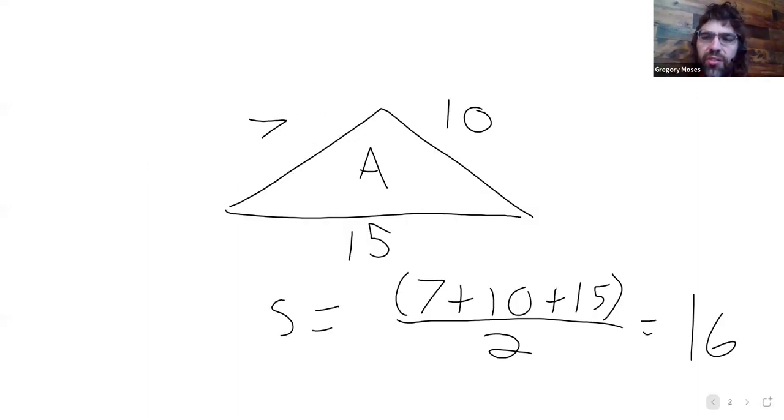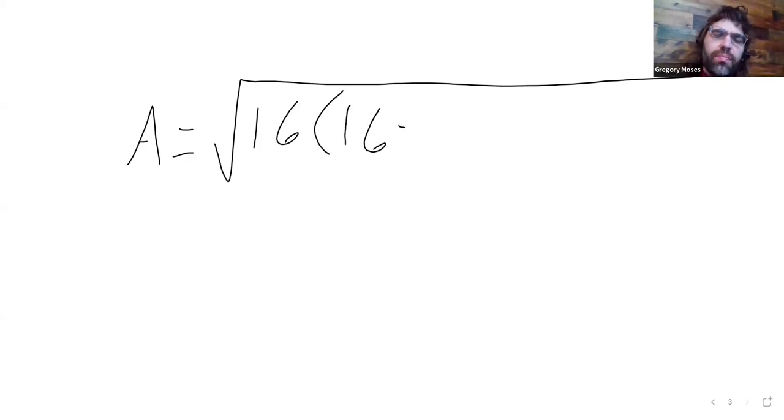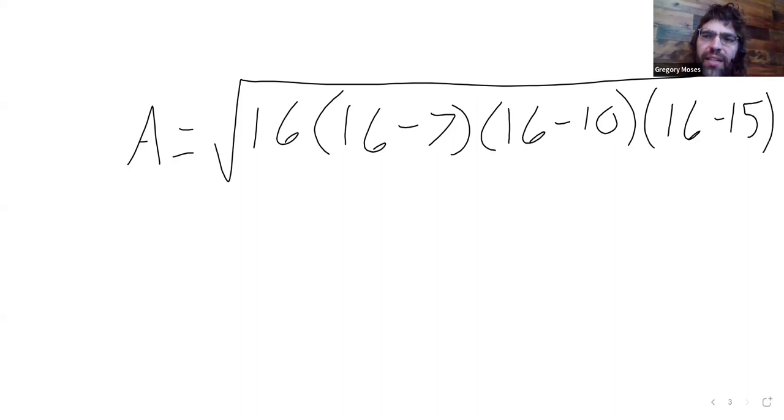Then the area is the square root of 16 times 16 minus 7 times 16 minus 10 times 16 minus 15. You plug that into a calculator, you get 29.4 or thereabouts.